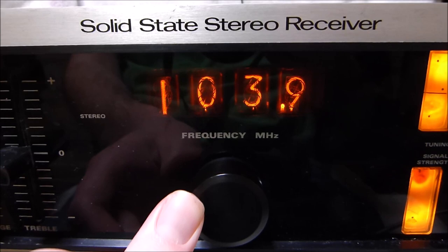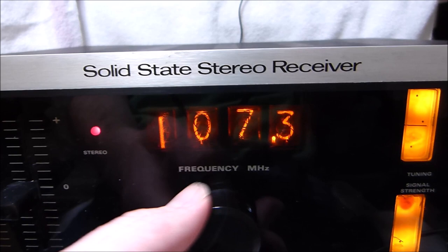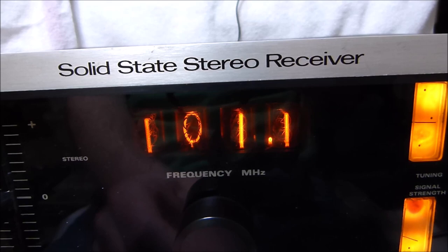And there it is. That's the Nixie Tube display for the frequency. Now this receiver doesn't actually have digital tuning. What it has is an analog tuner that feeds a frequency counter to display the frequency you have the thing set to.